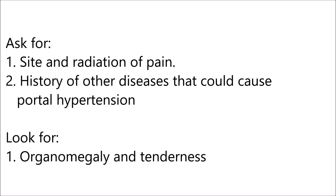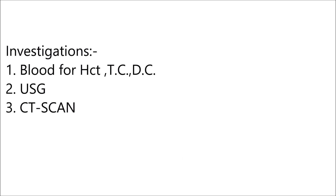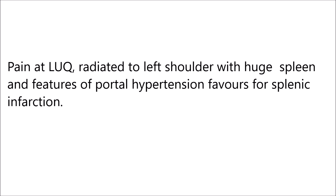If the patient comes with left hypochondriac pain, ask for the site and radiation of pain, and history of other diseases that could cause portal hypertension. Look for organomegaly and hepatic tenderness. Investigations should include blood for hematocrit, total count, differential count, ultrasound, and CT scan. Pain at the left lower quadrant radiating to the left shoulder, with a huge spleen and features of portal hypertension, favors splenic infarction.